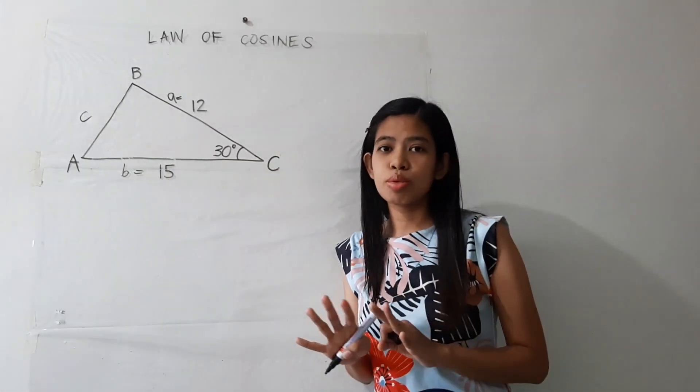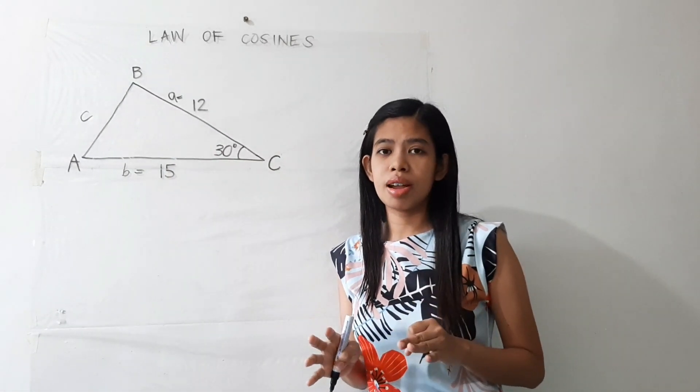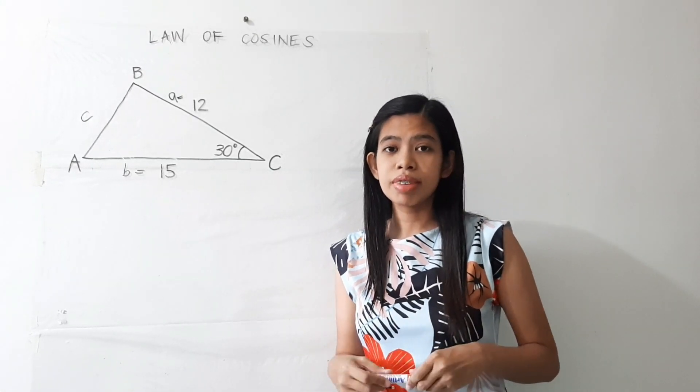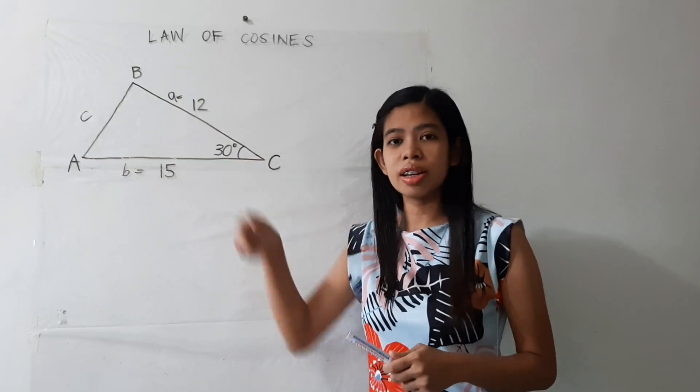So in this case, we may not use the Pythagorean theorem because as we all know, Pythagorean theorem can only be used in right triangles. And this is an oblique triangle.